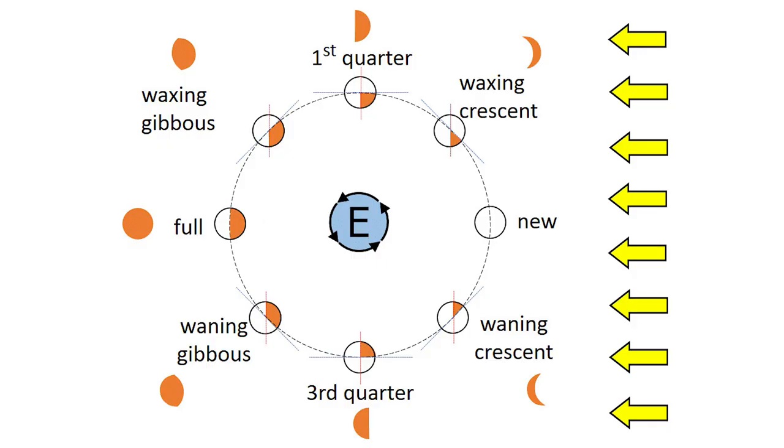At this point you can introduce the names of the phases like gibbous, crescent, full moon, new moon, waning, waxing, and the sequence of the phases. In my experience, this is where a lot of students get confused. This toy really helps them understand the concept well and in an interesting way. You can also ask students to play a small game where one student tells the name of the phase or number of days and the other student draws the shape of the moon.